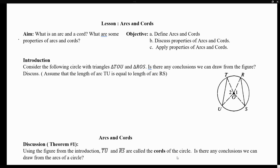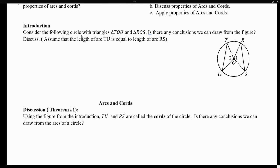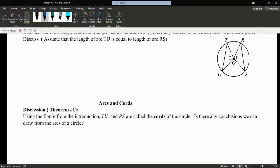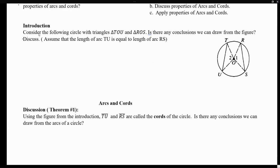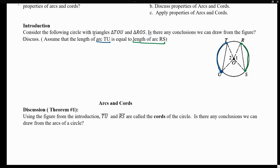Let's start by looking at this introduction question. We consider a circle with two triangles, TOU and ROS. Is there any conclusion we can draw from this figure? There are two pieces of information stated. The first one is: let's assume that the length of arc TU is equal to the length of arc RS. So we're going to assume those two arcs are equal in length. What are some conclusions we can draw from this figure?